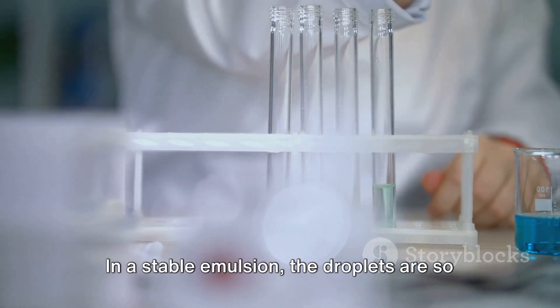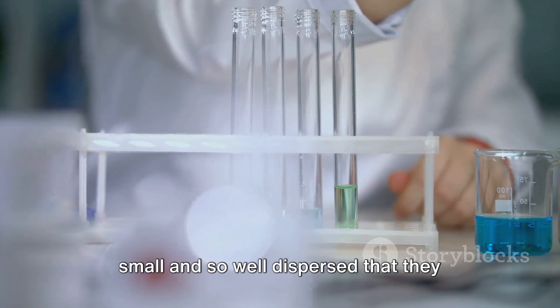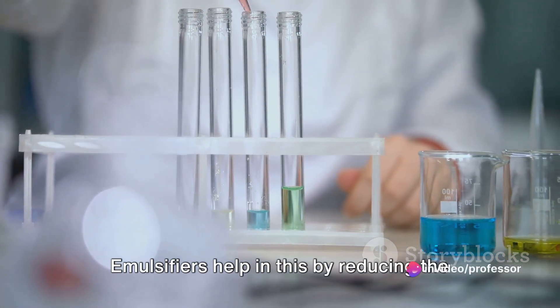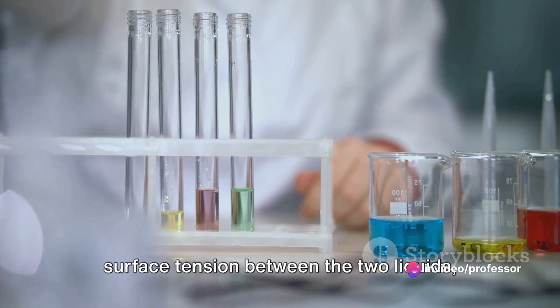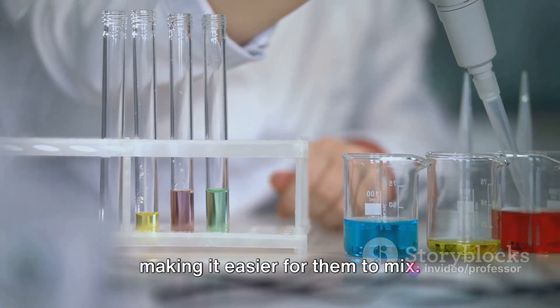In a stable emulsion, the droplets are so small and so well dispersed that they resist coming together. Emulsifiers help in this by reducing the surface tension between the two liquids, making it easier for them to mix.